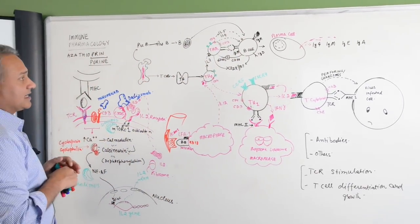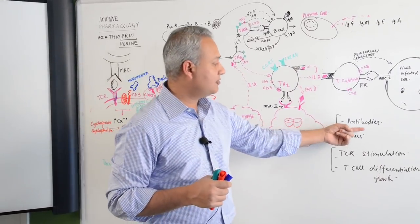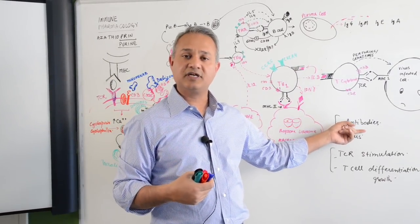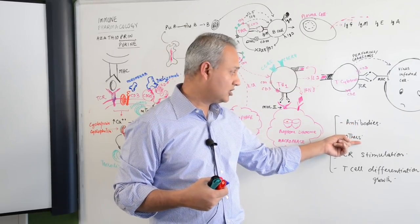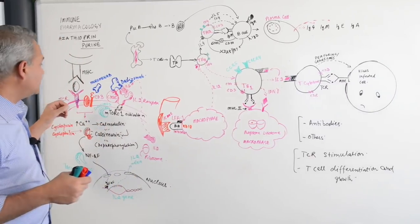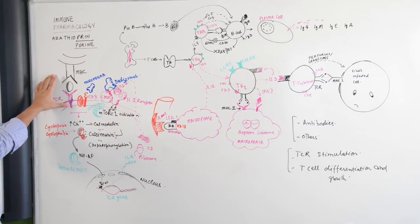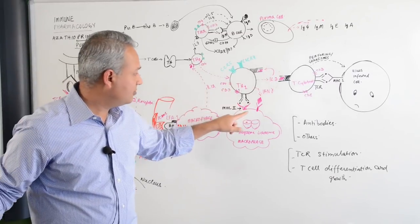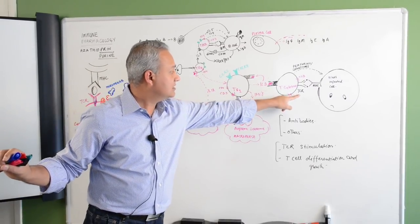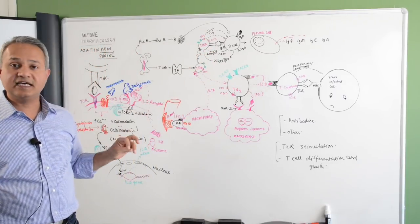Now, the drugs that act, they act in following ways. Number 1, some of these, let us categorize them. Some of these drugs are antibodies, others are not. The other way to look at them is that there are drugs that inhibit, inhibit the receptor, T cell receptor. That would be this receptor, this receptor, this receptor, they block the receptor itself.